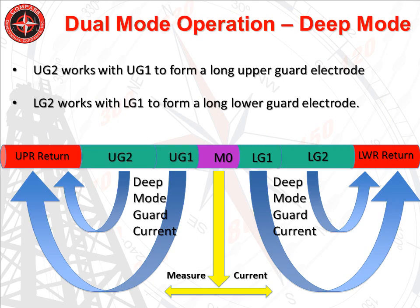This slide shows the electrical configuration for the deep or long guard mode. For this mode, upper guard 2, upper guard 1, the measure electrode, lower guard 1, and lower guard 2 are all energized with voltage V-measure. The current return is composed only of the upper return and the lower return, held at zero volts. Current flows out of the five middle electrodes, fans out, and returns to the upper and lower return sections. The guard currents are not measured — only the current flowing out of the measure electrode is measured and used to compute R-apparent for the deep mode.